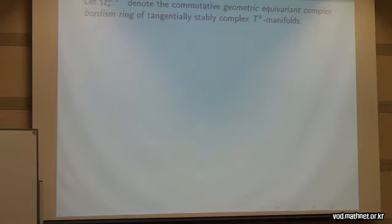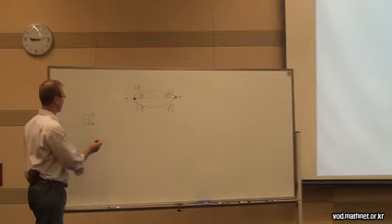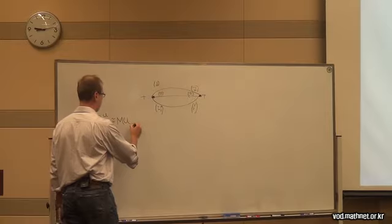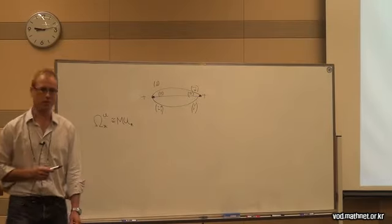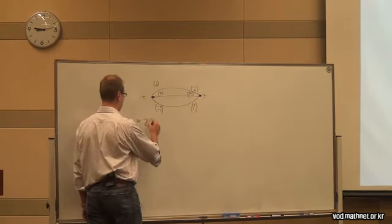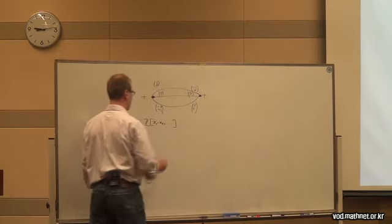Complex cobordism is a well-known, well-studied subject. We know by the theorem of Milnor and Novikov that non-equivariantly we can take the bordism theory of stably complex manifolds, Ω*^U, and that this is isomorphic to the coefficient ring of the Thom spectrum associated to complex universal bundles, which is isomorphic to a polynomial algebra.